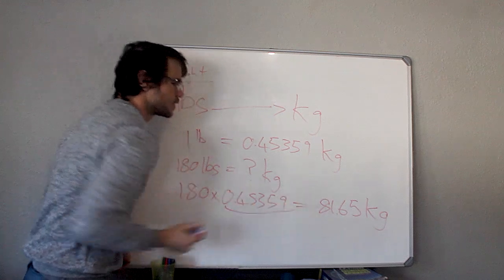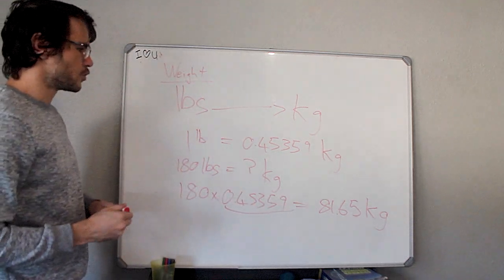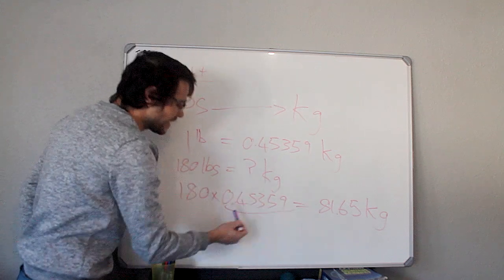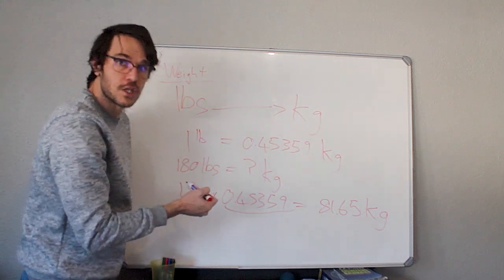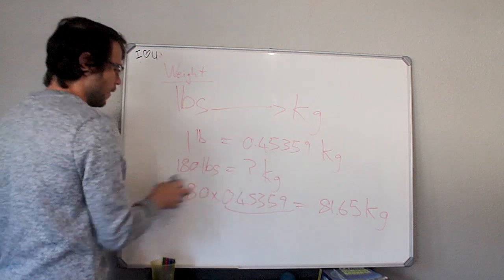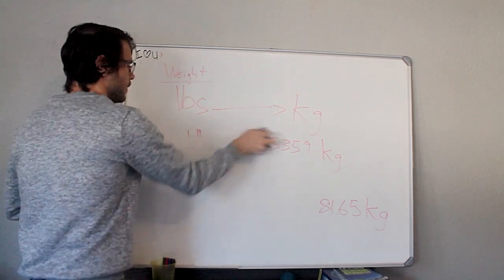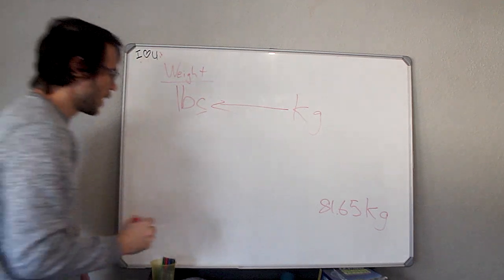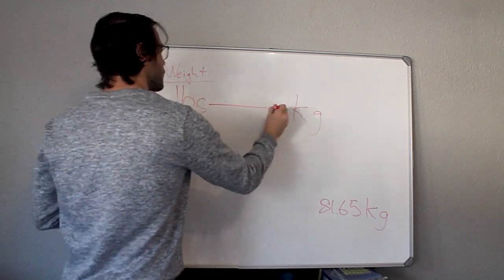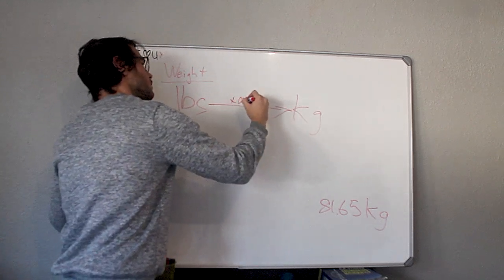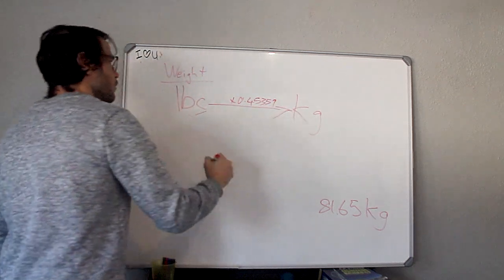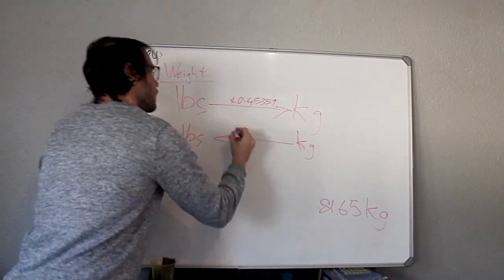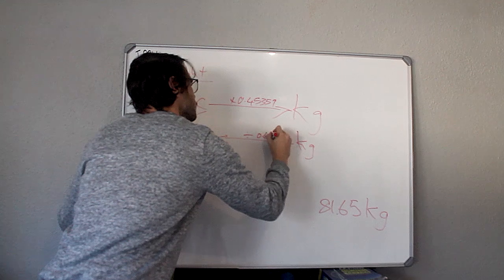So that is our constant to convert from pounds to kilograms. In order to convert back, if we want to convert the 81 kilograms into a pound value, we can now divide by this. Dividing by 0.45 is the same as multiplying by just over 2, 2 point something. So if we now have our 81.65 kilogram value and we want to turn this around, what do we do?